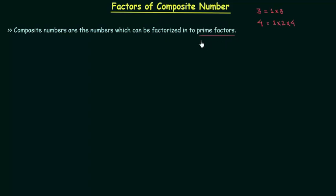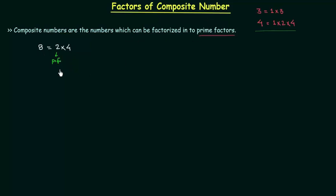We have knowledge of factors, but we have to understand what a prime factor is with the help of an example. Let's say the number is 8. I can write 8 as 2 multiplied by 4. Now 2 and 4 are factors of 8, but 2 is a prime factor because 2 is a prime number. If a factor is a prime number we call it a prime factor. If a factor is not a prime number, it is simply a factor — like 4. Since 4 is not a prime number, this 4 is not a prime factor. To find factors of a composite number, we need to break the number into prime factors.